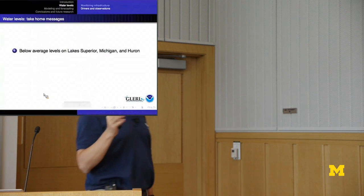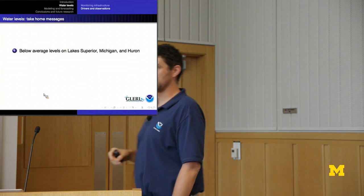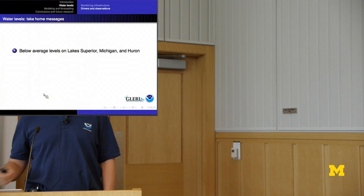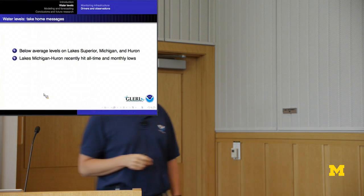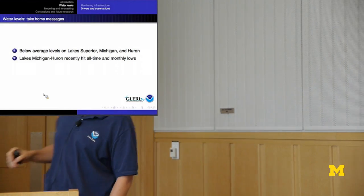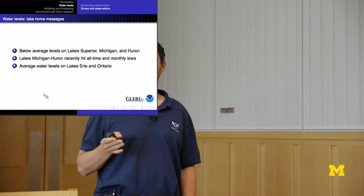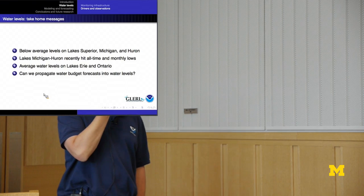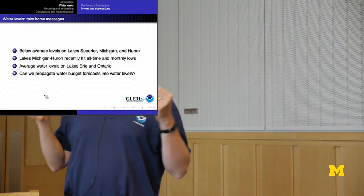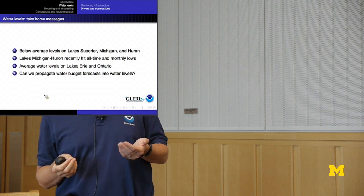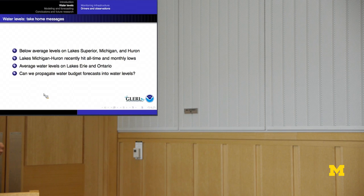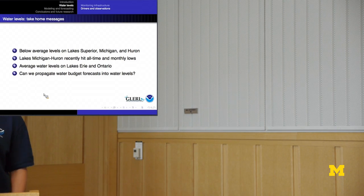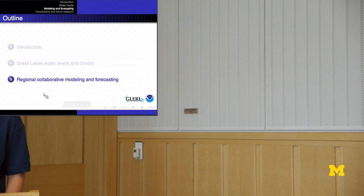Some take-home messages from this part of the talk: water levels on Lake Superior and Michigan-Huron have been below their long-term average for the past 15 years. Lake Michigan-Huron recently hit not just all-time lows for the month of December, but all-time lows across the entire year in January 2013. Water levels on Lake Erie and Lake Ontario have been right around the long-term average for quite some time. A major research question is how we can take our understanding of these water budget components — particularly forecasts — and propagate those into forecasts of water levels, which is what we're going to talk about next.